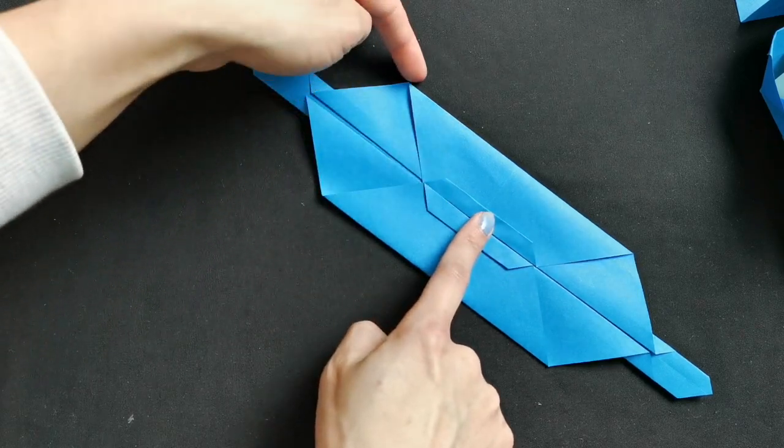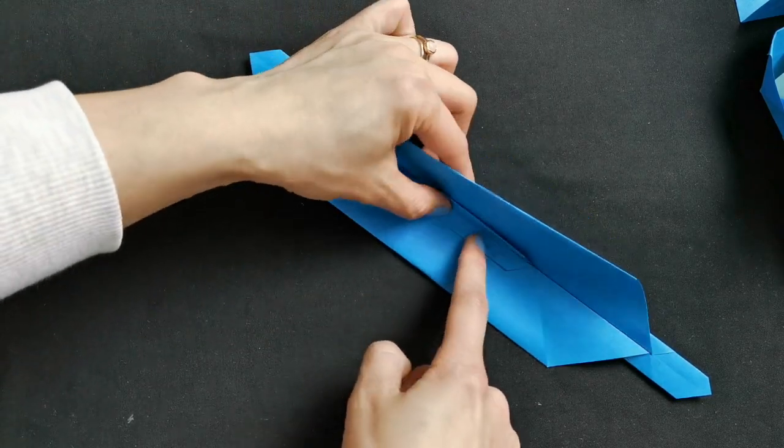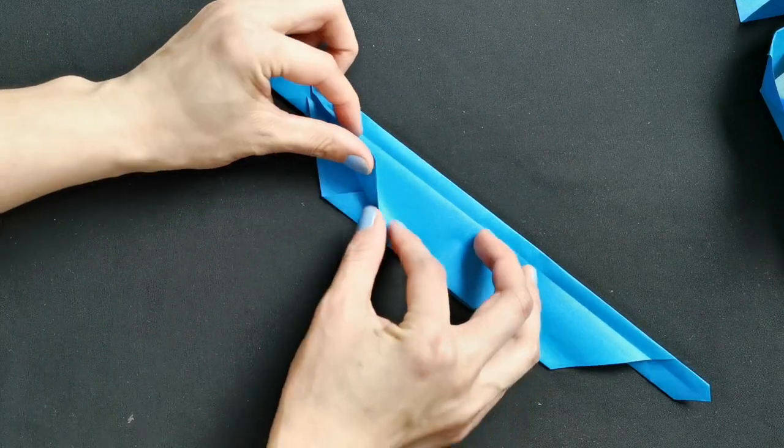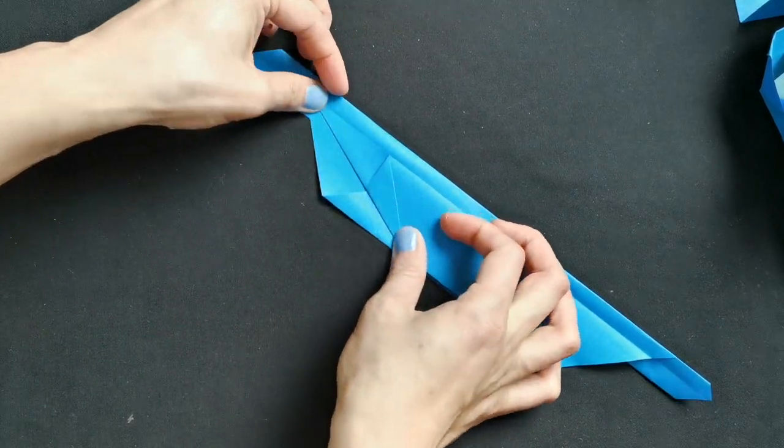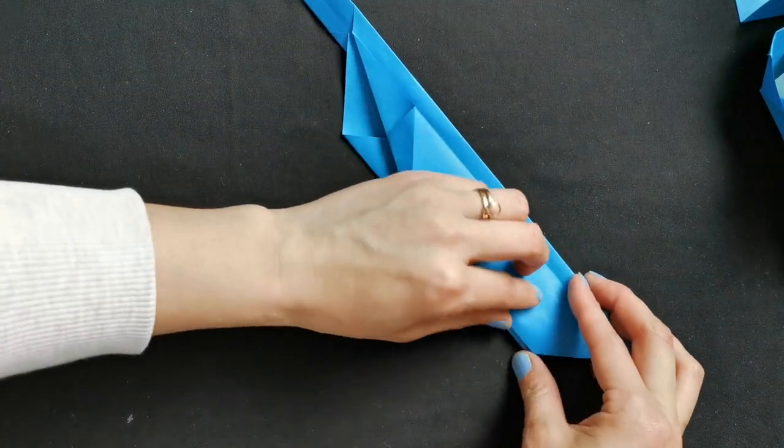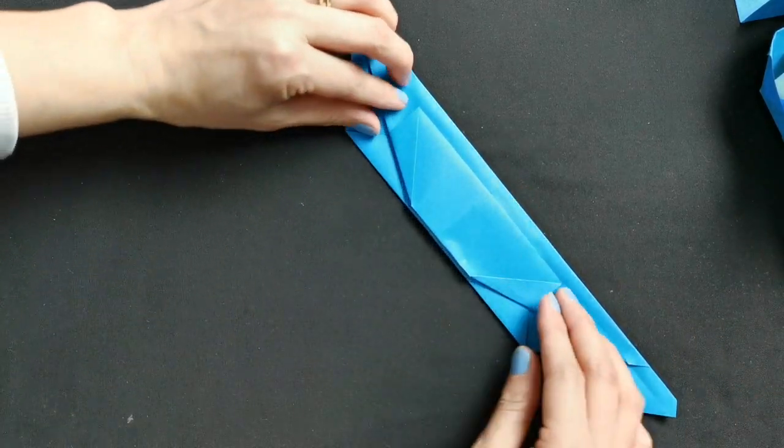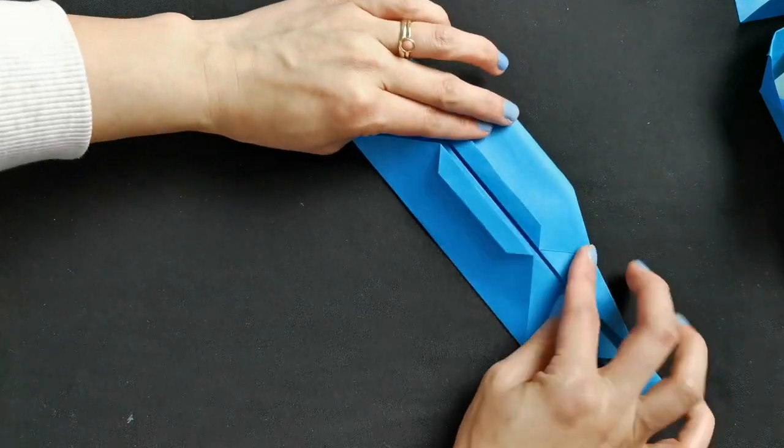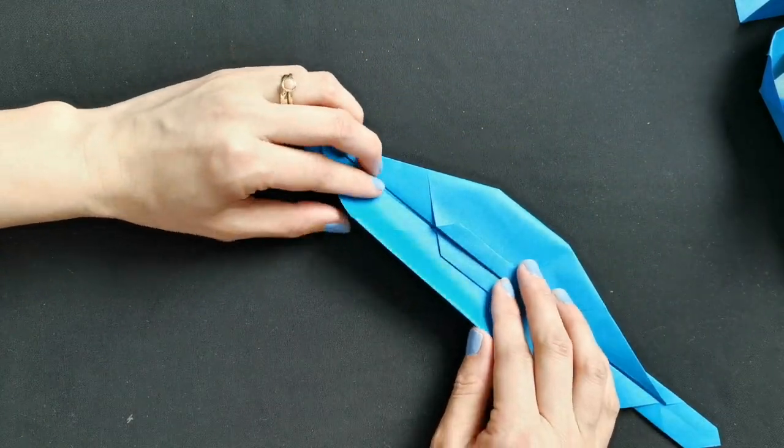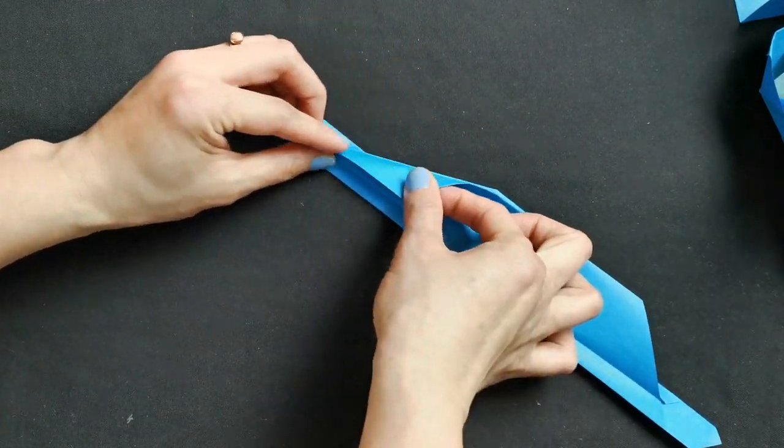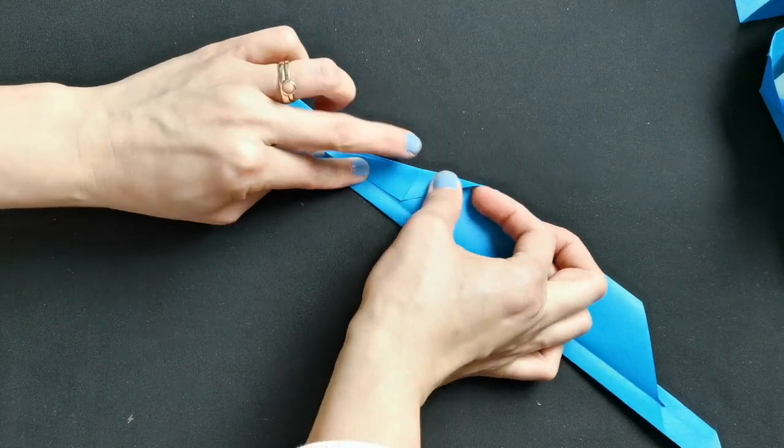Now we're going to fold in half again and now we're going to fold this corner back along this line like this and flip over. Back the same at this side, fold it back.